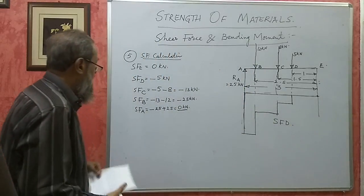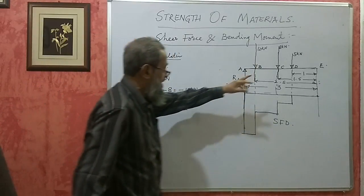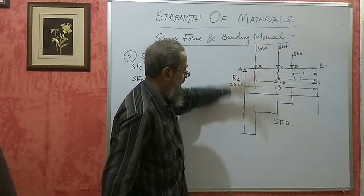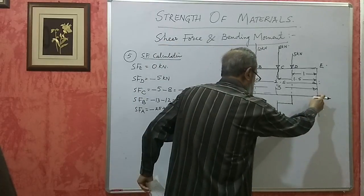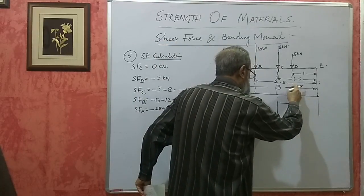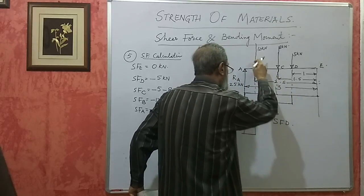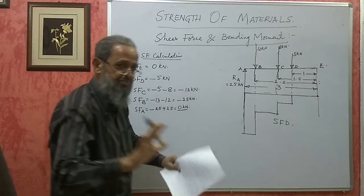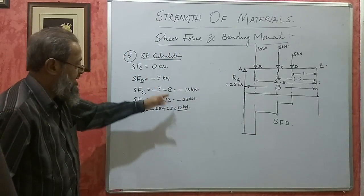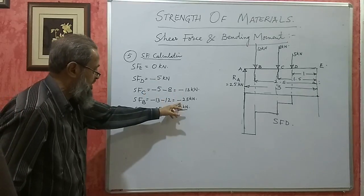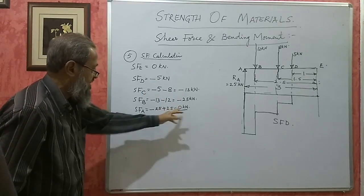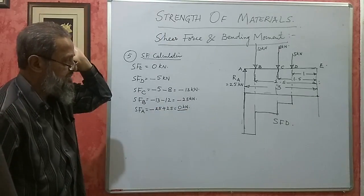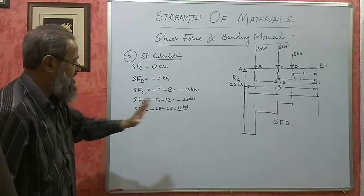If we had taken downward forces as positive and the reaction as negative, the figure would have gone upside down — the values would be plus 5, plus 13, plus 25, then minus 25, giving 0. The same figure, just inverted. That is the difference in sign convention.